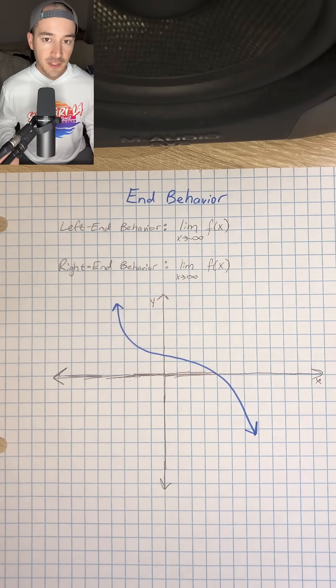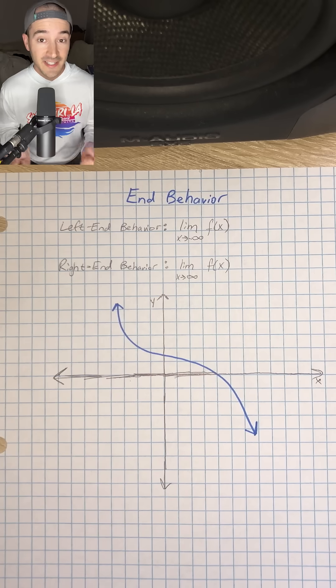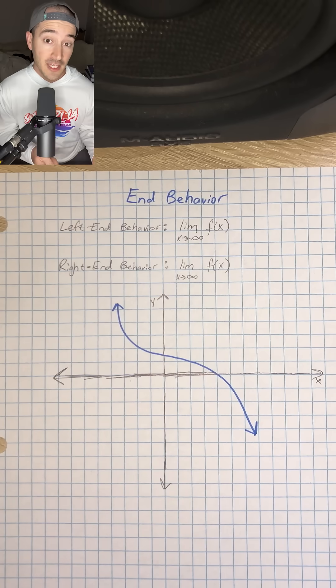And basically, end behavior just describes how a function behaves as you go towards either end of the graph, either left or all the way to the right.